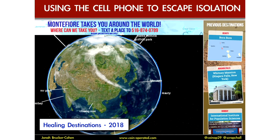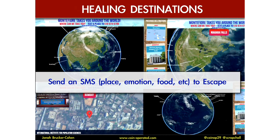I built this project called Healing Destinations, which is a large-scale globe that fits on the TVs there. People would just send it a message — anything they want, a place, something that reminded them maybe of home — to keep them away from the hospital setting so they feel a bit more at home. You can send it a place, an emotion, a food that you liked, and it'll take you out of the hospital space to a location like that. It's kind of like Google Earth, but a bit more wandering and tech-based.